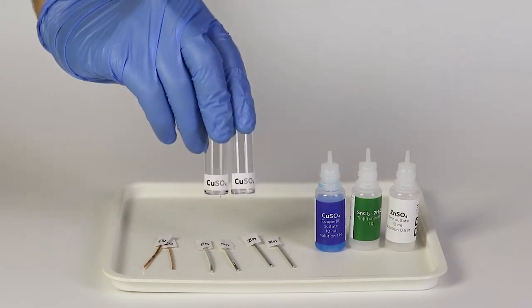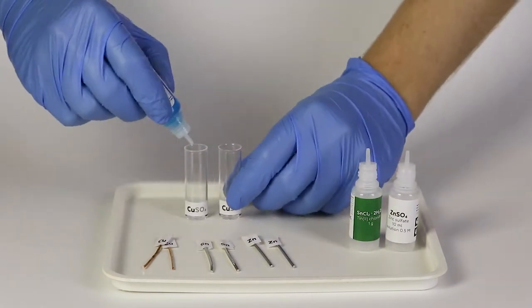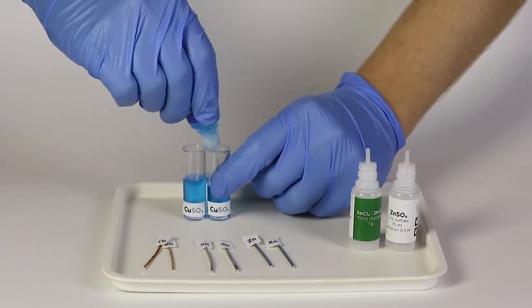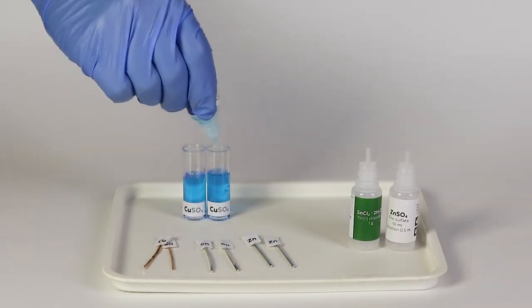Now take the solutions of copper sulfate and zinc sulfate. Fill each of the vials approximately half full with the corresponding solutions of copper sulfate and zinc sulfate.